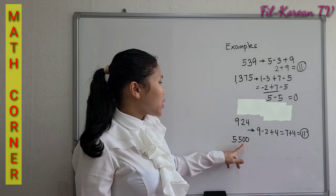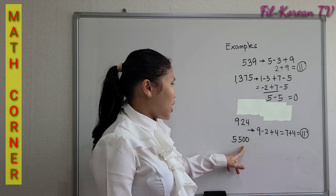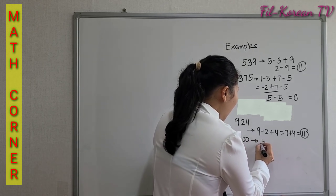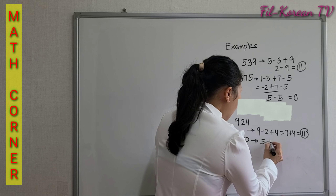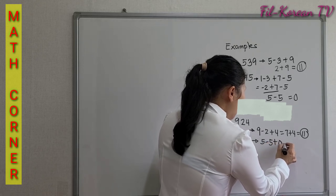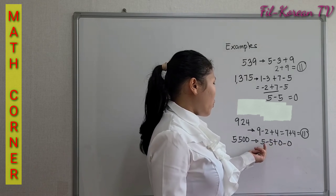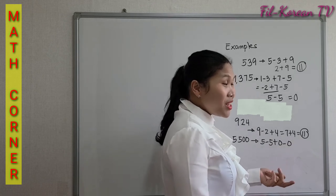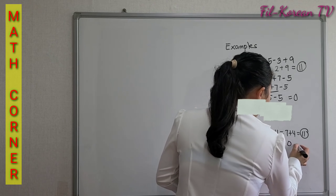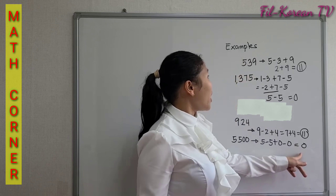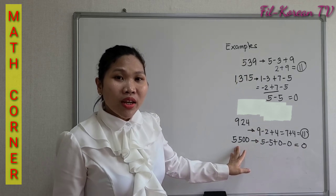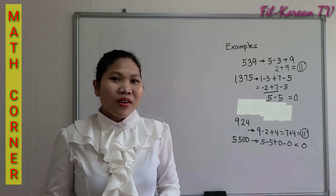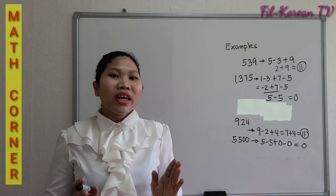Last example: 5,500. Apply the rule — subtract, add, subtract: 5 minus 5 equals 0, 0 plus 0 equals 0, 0 minus 0 equals 0. Since the result is 0, 5,500 is divisible by 11. That is the rule for 11.